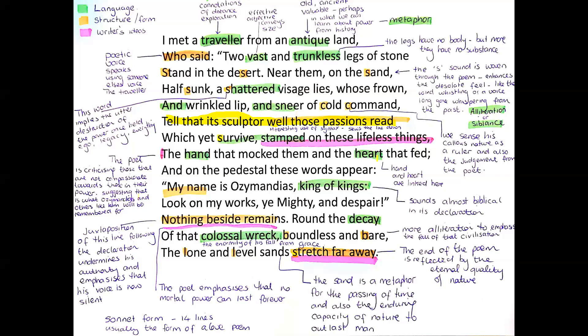Those are the things that are really important when it comes to structure for Ozymandias. I will put some links in your worksheet so you can look at what a Petrarchan or Shakespearean sonnet is. I've done it in two parts: language in the first video and form and structure in the second. As you can see, they all interplay with each other — language, form and structure are fluid. It's quite difficult to separate them at times because one will complement the other, and an element of structure might also come under a language feature as well.